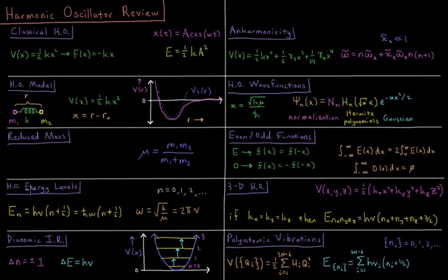The energy levels for this system, once we solve the Schrodinger equation, depend on a quantum number n, which starts at zero and goes up as an integer: zero, one, two, etc.